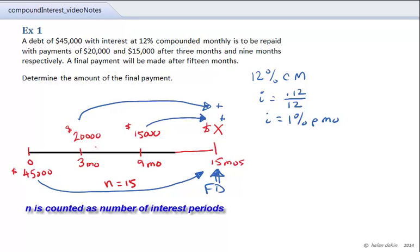And the $20,000 will be moved over a time period of 12 months. So we've got n equals 12 months on the $20,000 payment. And we have from 9 months to 15 months, we've got a total of 6 months for the $15,000. And so the equation of values is going to state the following.